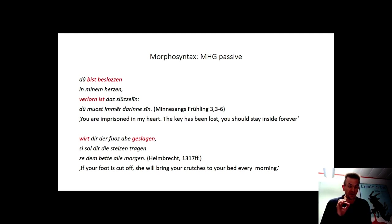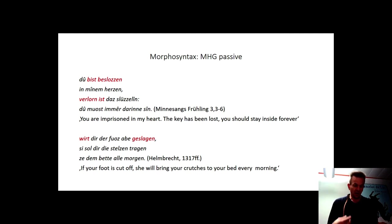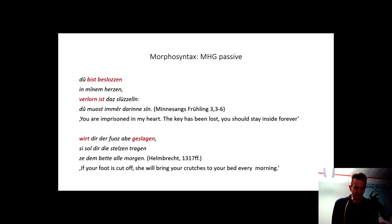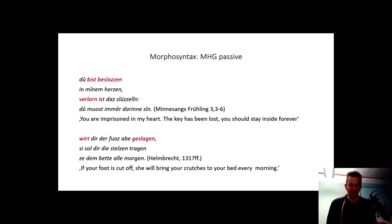The passage reads: 'Du bist beschlossen in meinem Herzen. Verloren ist das Schlüsselin. Du musst immer darinne sein.' The same applies to the eventive passive with werden plus past participle, which is also used on numerous occasions in Middle High German, as in the Helmbrecht quote on the slide.